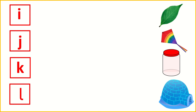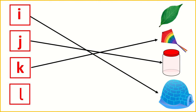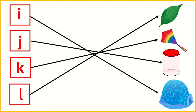I for Igloo, J for Jar, K for Kite, L for Leaf.